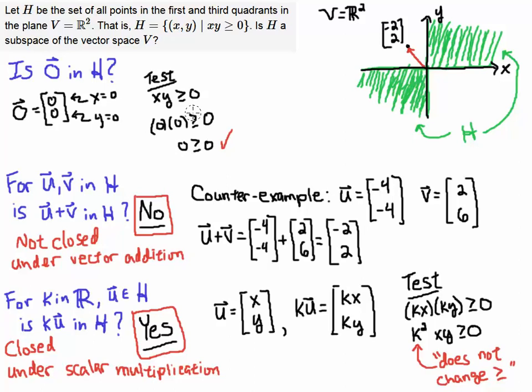So here's a case where the set satisfies two of the conditions. Zero is in the set, and the set is closed under scalar multiplication. However, it fails one of the conditions, and that is it is not closed under vector addition. So the answer to this question is H a subspace of the vector space V. The answer to this is no, because you did not pass all three conditions. You failed one of the conditions, and that was this condition right here, that it is not closed under vector addition.